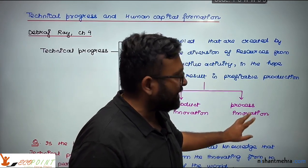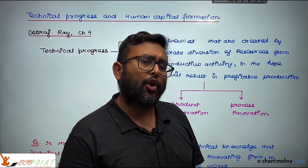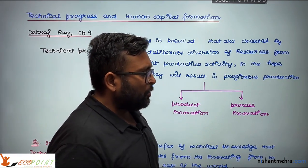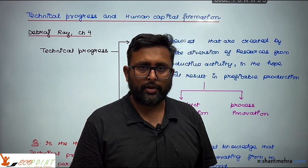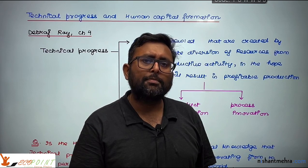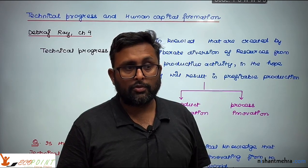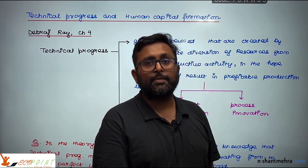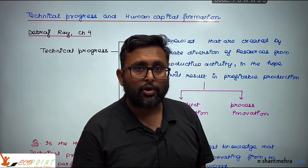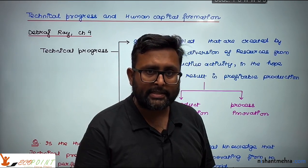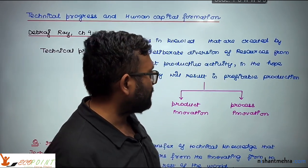There can be two kinds of innovation. One is product innovation, the other is process innovation. Product innovation is when you try to develop a completely new product in the market — for example, the iPhone was a completely new product. Then you have process innovation: when the same thing is being produced but through a novel process that takes less cost and less time to produce more. That is process innovation.